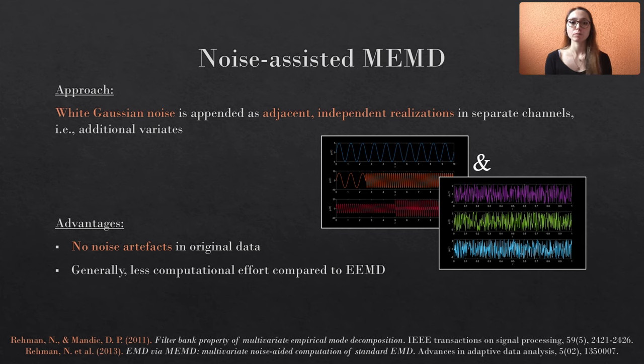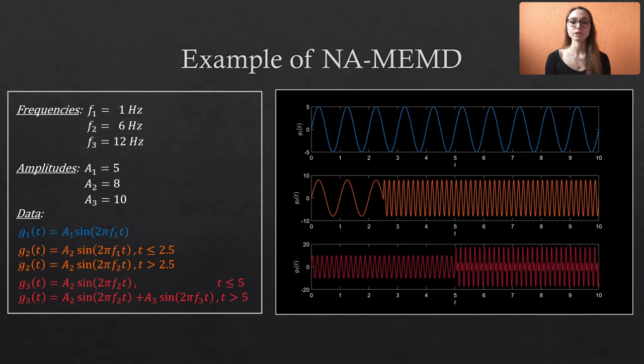Let's take some exemplary data and apply the noise-assisted MEMD. In total, our input data consists of three channels. The first variate G1 is a simple sine wave with a frequency of 1 Hz and an amplitude of 5 and is colored in blue. The second variate G2, which is given in orange, starts with the same frequency but suddenly changes to a higher frequency of 6 Hz at t equals 2.5. The amplitude is constant along the complete time span.